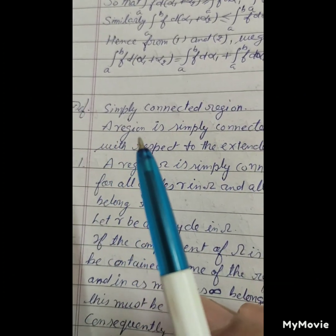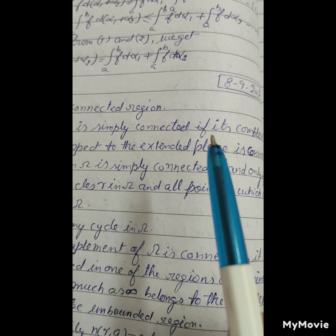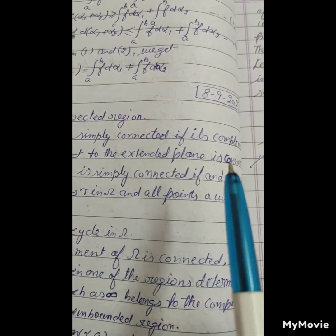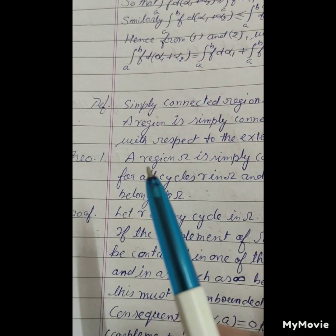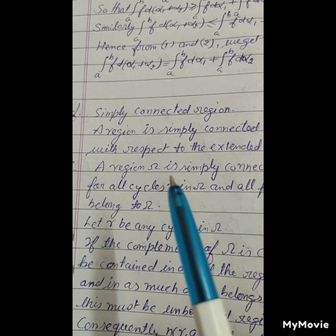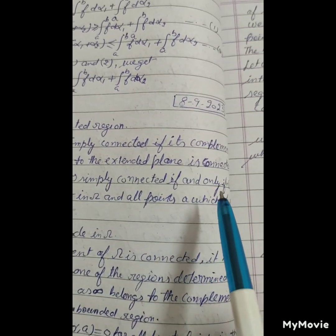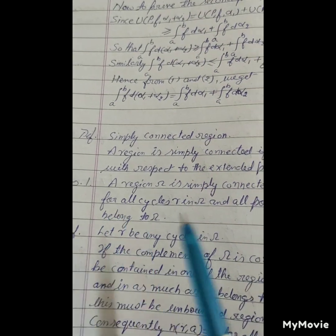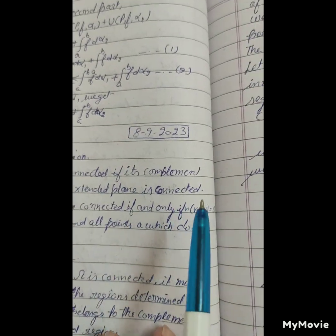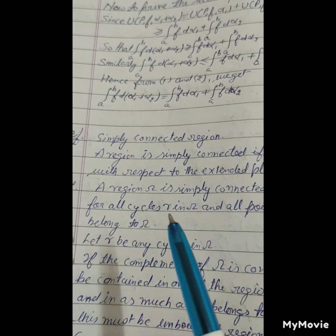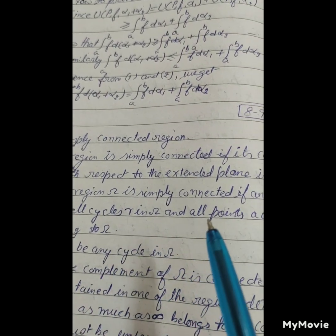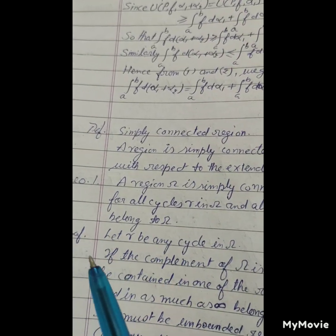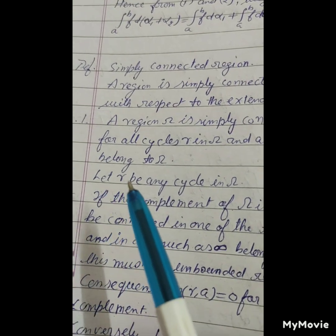A simply connected region is simply connected if its complement with respect to the extended plane is connected. A region omega is simply connected if and only if n(gamma) equals zero for all cycles gamma in omega and all points which do not belong to omega.